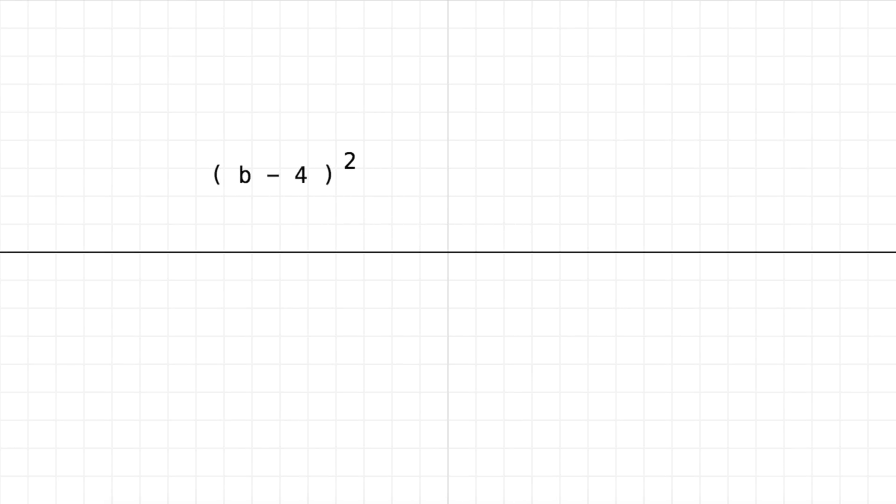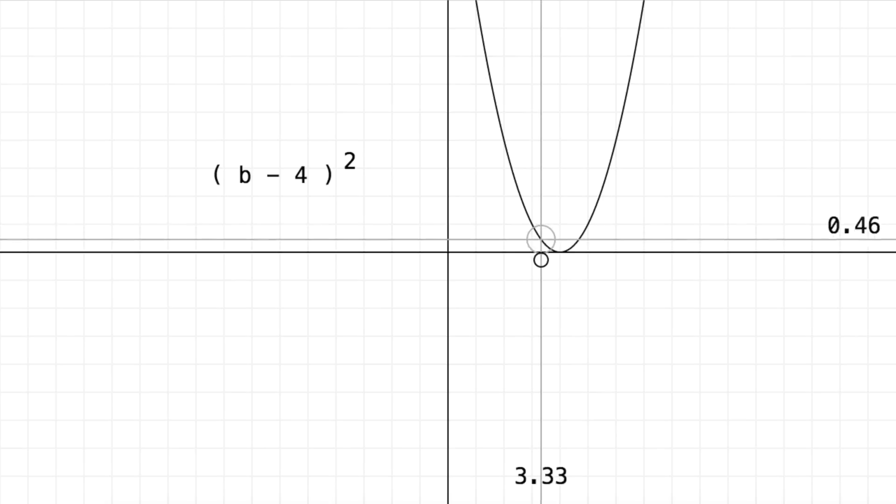So on the horizontal axis we'll vary b. On the vertical axis we'll graph the cost and let's take a look. Okay, so it's a parabola and if you notice it's centered right on b is equal to 4. So the cost is equal to 0 when b is equal to our target value.